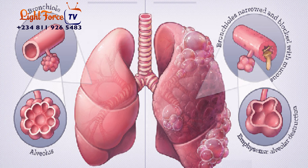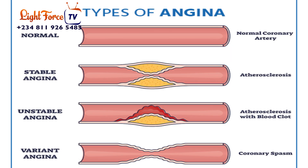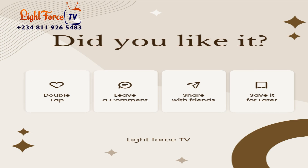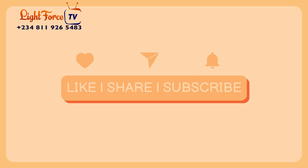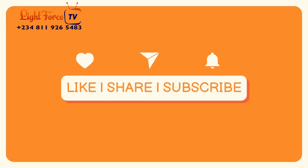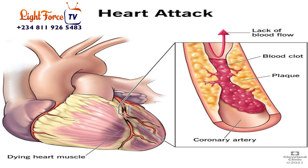There are two types of angina: unstable and stable. Unstable angina can happen at any time, while stable angina happens when your heart is under stress — for example, when your heart rate increases, especially right after finishing exercise.